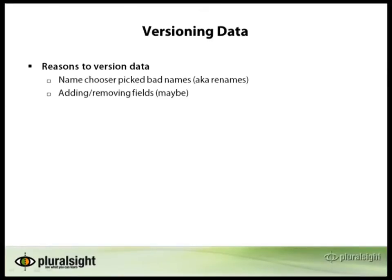Another reason to version data is if you're adding or removing fields. I say this as a maybe because if the fields aren't required and can be forced to show up at the end, some folks will argue they don't need a new version and can just inject them at the end. In general though, if you're changing the contract, it's fairly inexpensive to create a new version of a data structure and migrate between the two. So I would recommend that if you're adding or removing fields, create a new version of your data structure.